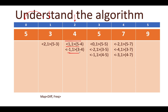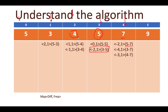For i=3, j starts at 0. a[0]-a[3] = 5-5 = 0, fresh entry, add (0, freq=1). Next j=1: 3-5 = -2, fresh, add (-2, freq=1). Next j=2: a[j]=4, 4-5 = -1. This is the special case — the difference is -1.